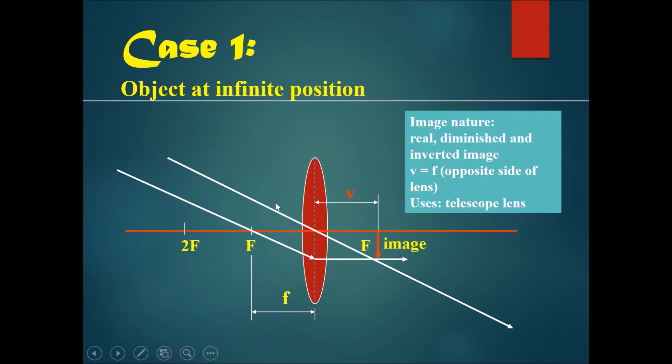We can consider these two lines to be parallel. So if the object is at an infinite position or near infinite position, this line will go straight through and this line will go through the focal point, hit the lens and produce a parallel ray.